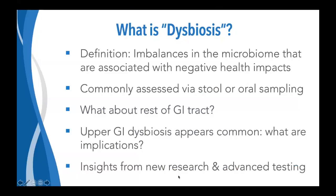The key question is where are we looking in terms of the microbiome and what imbalances are we talking about? Most of what we know about dysbiosis, especially in the gastrointestinal tract, comes from the sites most easily accessible for testing — basically stool samples by and large, as well as oral sampling for the oral microbiome. But the big question is, what about the rest of the gastrointestinal tract, and is it important when the microbiome in those areas is out of balance?